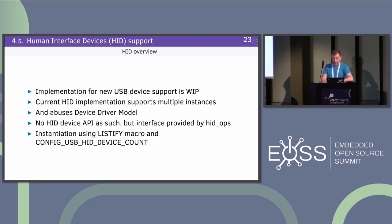HID — there is one implementation for the new stack in the tree and I'm currently working on a new one. HID supports multiple instances, but it abuses the device driver model. There's no HID device API as such — there's no device config or device data provided internally, so it just uses the device model API to get the instance. Instantiation itself is provided using the LISTIFY macro and a Kconfig option for device count. If you select two HID devices, the LISTIFY macro will create two instances internally.